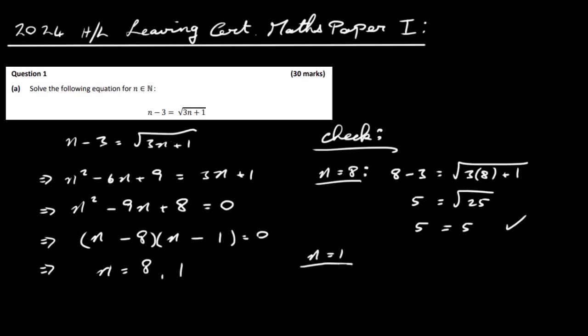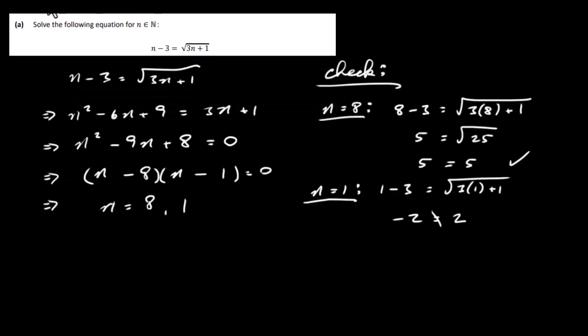Let's have a look at n is equal to 1. So if we put 1 in on both sides, we get 1 minus 3 is equal to the square root of 3 times 1 plus 1. 1 minus 3 is minus 2. And here we've got 3 times 1 is 3 plus 1 is 4. The square root of 4 is going to be 2. So this is not the case here. So we have to reject n is equal to 1. So my answer here is going to be n is equal to 8. And that's part 1 done, or part A done anyway.